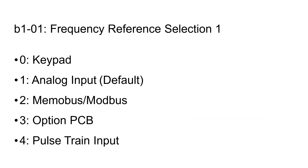The B101 parameter defines the frequency reference for the drive. The frequency reference determines the output frequency of the drive — more simply, it determines how fast it will spin the motor.